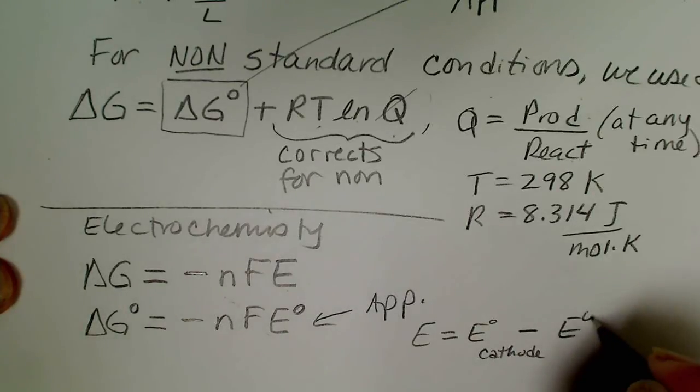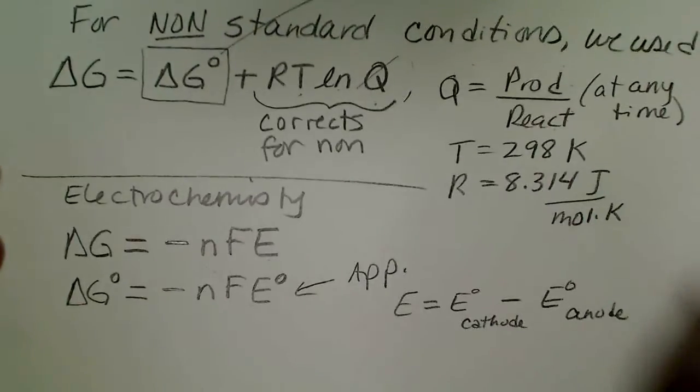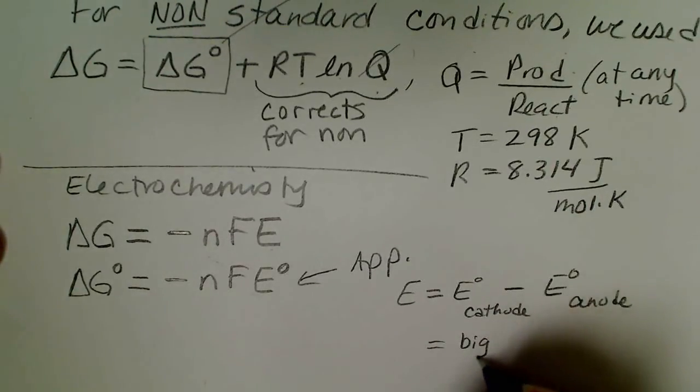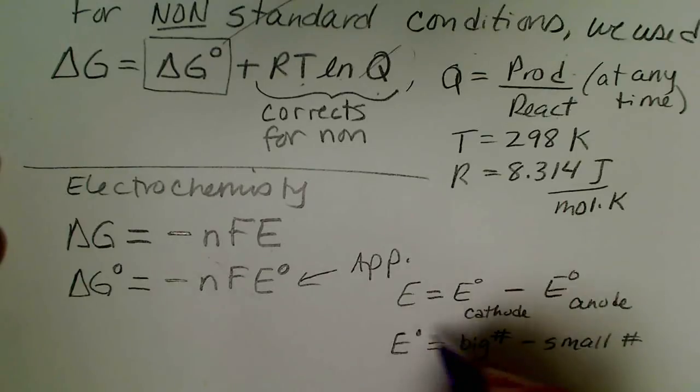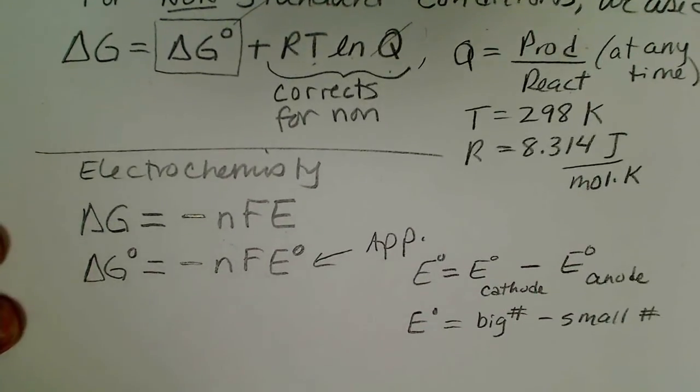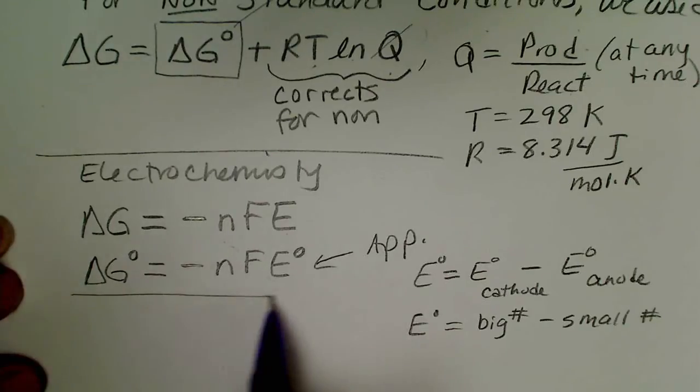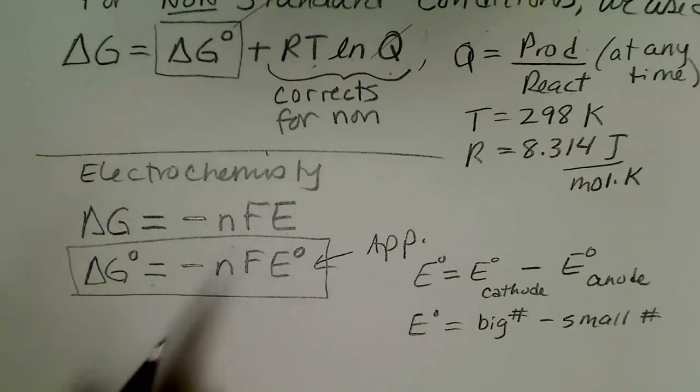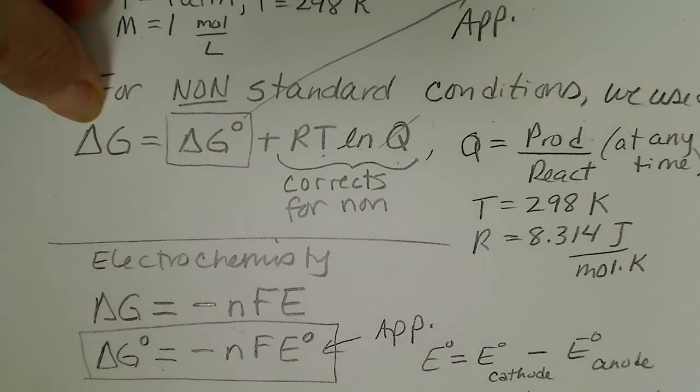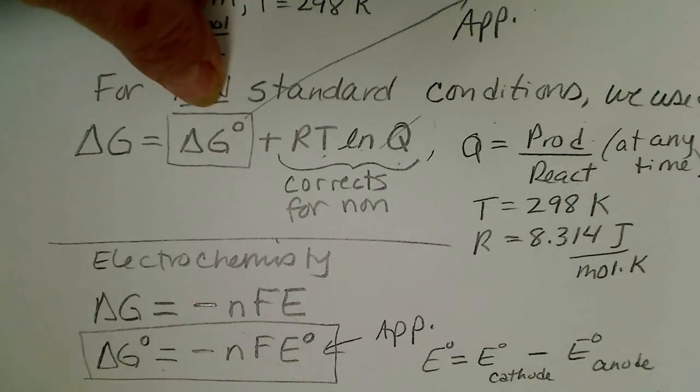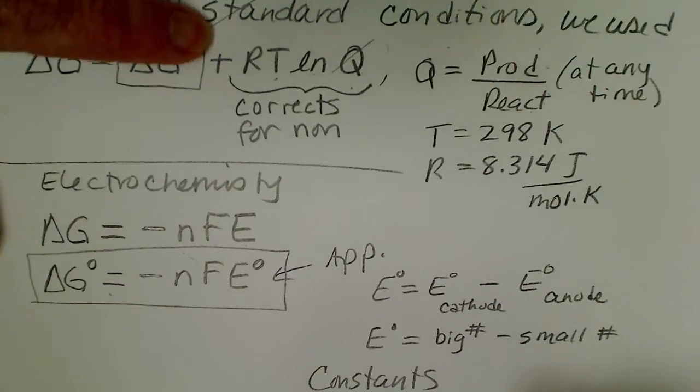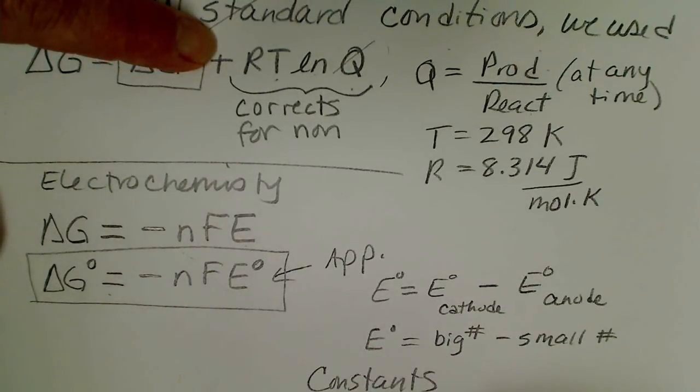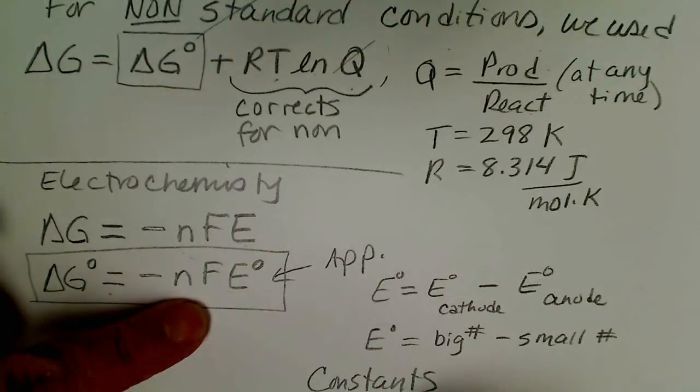And remember E is just the difference between the half cell reaction for the cathode minus the half cell reaction for the anode, and this always results in big number minus small number. Since delta G equals negative nFE we could make substitutions into this equation and Faraday's, all the constants that we have, the constants we were using, the R value and the Faraday's constant.